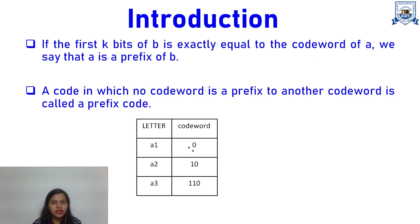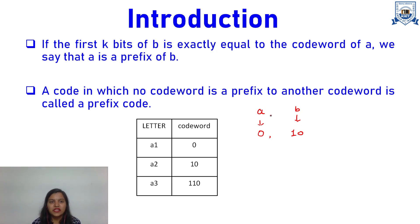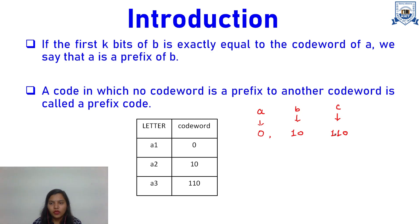For example, I have a code word 0 — call it a — and a code word 10 — call it b. If the first k bits of b are equal to the complete a, then we say a is a prefix of b. Here you can see b is not starting from 0, so a is not a prefix of b. Now I have another digit 1 1 0 for letter c. If we check whether 1 1 0 is starting from 1 0 — no, it is not — so b is not a prefix of c.